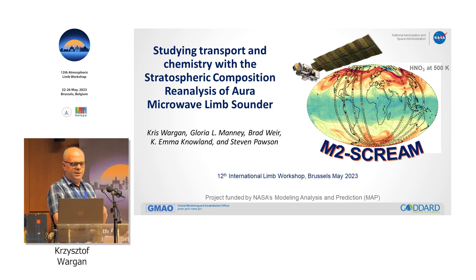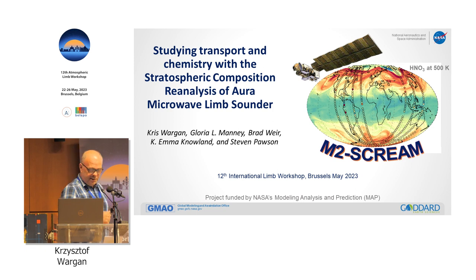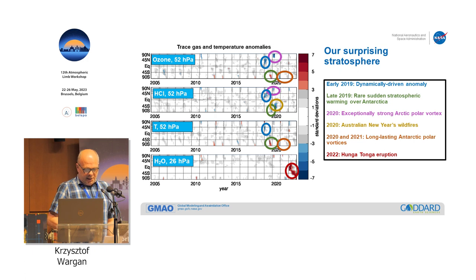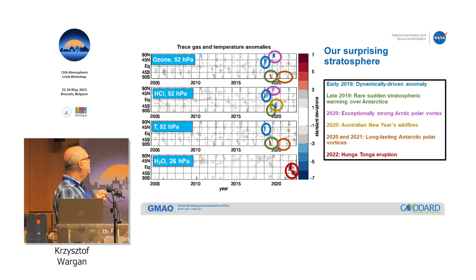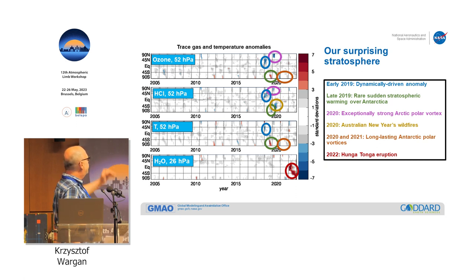SCREAM stands for Stratosphere Compositional Reanalysis of our MLS. Before I get to the nitty-gritty, this is an overview plot of something I would really like to study in detail. It essentially shows anomalies of several different species — temperature, water vapor, HCl, and ozone — from SCREAM at selected pressure levels for the entire period of the reanalysis.